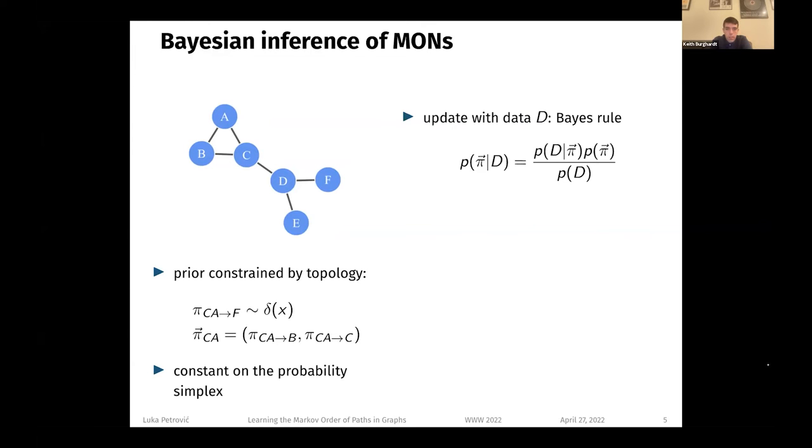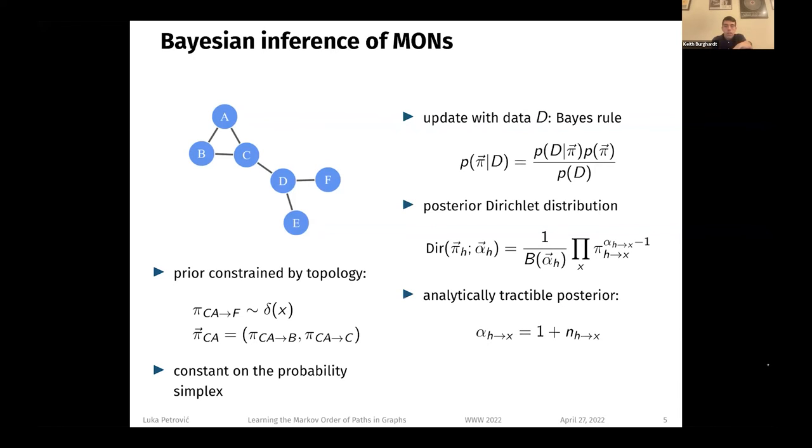The remaining parameters, like the transition probabilities from C, A to B and to C, form vectors that live in the probability simplex. We assume a constant uniform distribution over the probability simplex. The rest of the inference is standard. For a given pathway data D, we compute the posterior using Bayes' rule, and the posterior is a Dirichlet distribution, which is analytically tractable. And the last formula represents the update rule for the parameters of the posterior distribution.